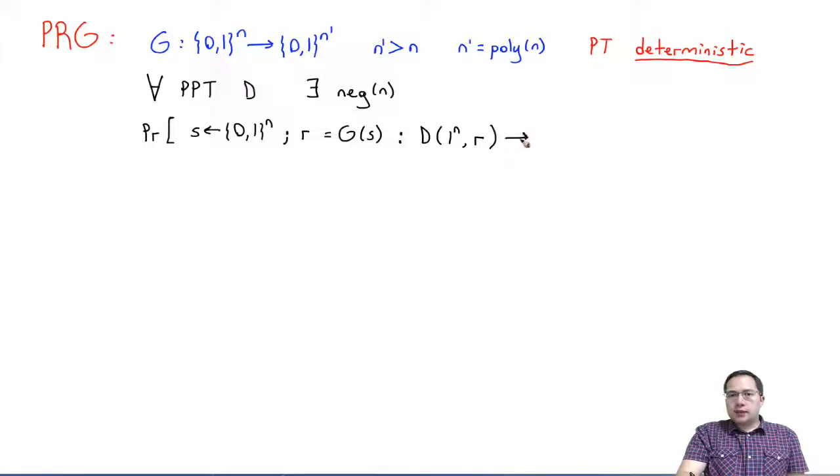And then, I'm going to give this value R to the distinguisher. It will tell me either random or pseudo-random. So let's look at the probability that I pick a random seed, compute G of that, and give the output to the distinguisher, and it says random.